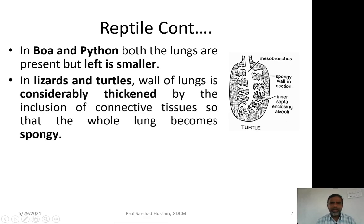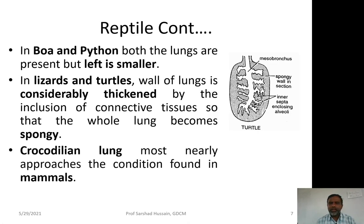In lizards and turtles, the wall of the lung is considerably thickened by well-developed folding of the inner wall to increase surface area, resulting in a very much reduced central cavity. Because of this thickening of the wall, these lungs have become spongy. The crocodile lungs resemble mammalian lungs more than reptilian lungs in structure.